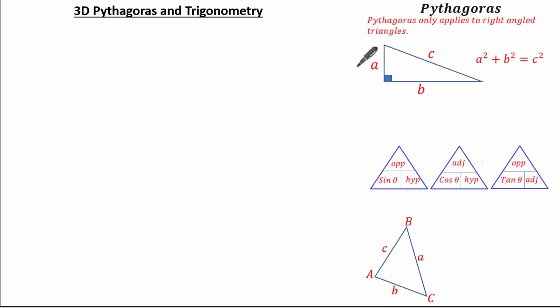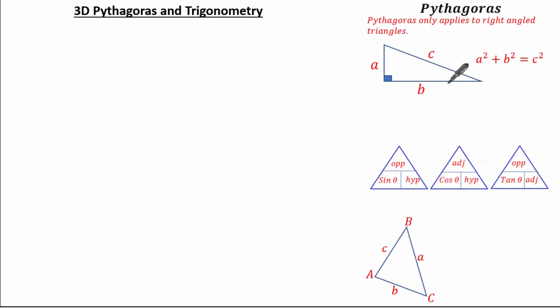Remember Pythagoras only applies to right-angled triangles, where Pythagoras' theorem states a squared plus b squared is always equal to the hypotenuse squared.